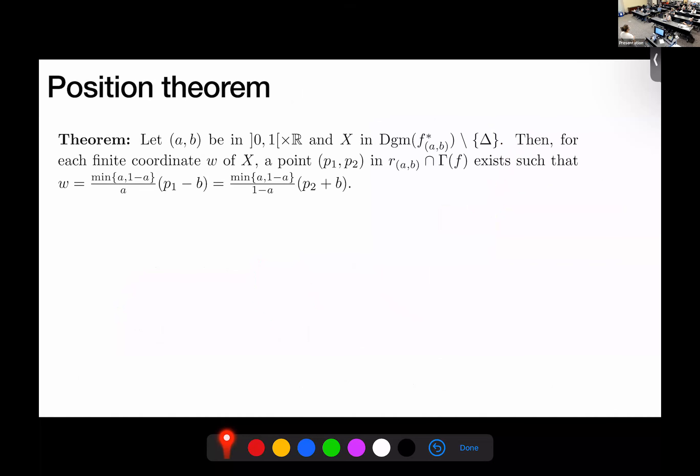All right. What do we use it for? It turns out that this extended pareto grid together with the filtering lines that we are considering gives us persistence features of the function, in particular, for a fixed a parameter value, a, b, and taking the persistence diagram of the function associated to that a, b, then for each coordinate of the persistence diagram, there is an intersection point between the filtering line at that same point and the extended pareto grid that gives us that coordinate in the persistence diagram. It's much easier to see with an example.